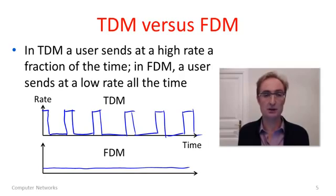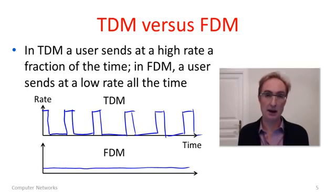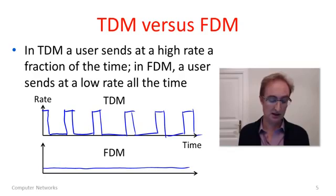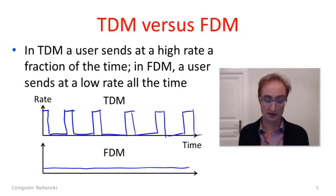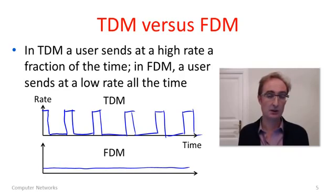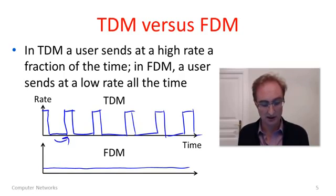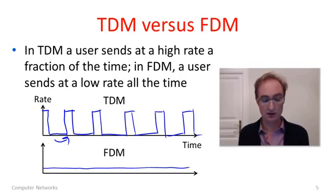Time division multiplexing and frequency division multiplexing are simply alternative ways to divide the resources of a link. Neither one is inherently better; neither one provides more capacity. They do have some trade-offs. TDM is a little more complicated in that it requires synchronization. However, with TDM, when you get to send you're sending at a faster rate, so if information arrives just at the start of your time slot, the delay will be lower because it goes out at a faster transmission speed.